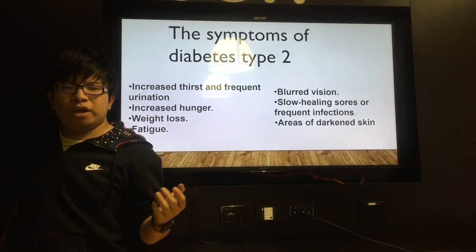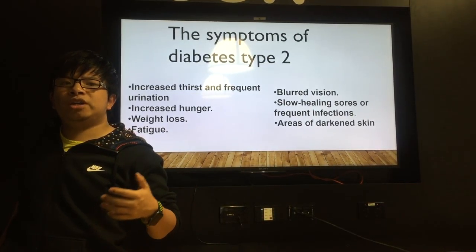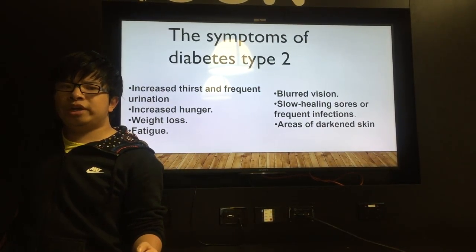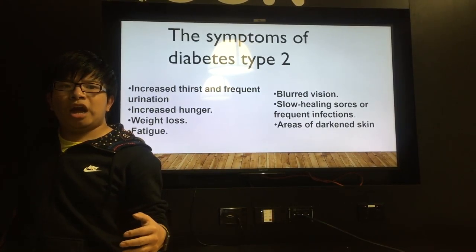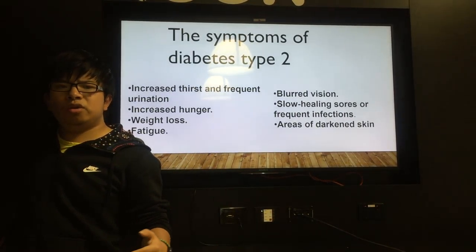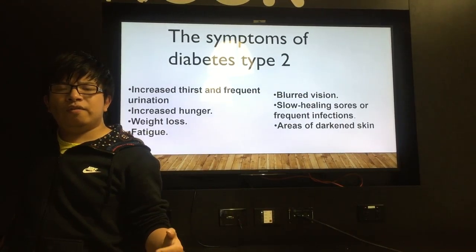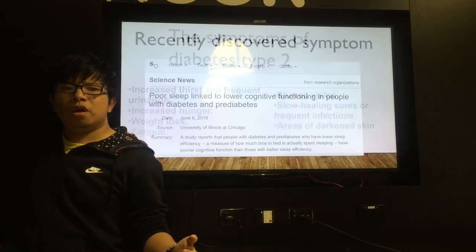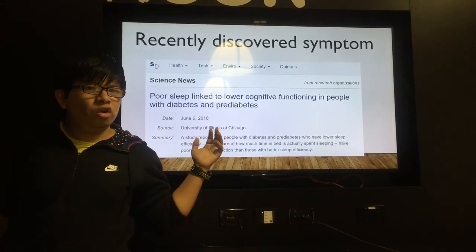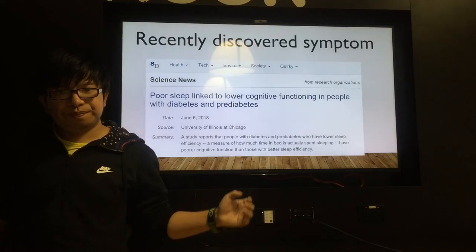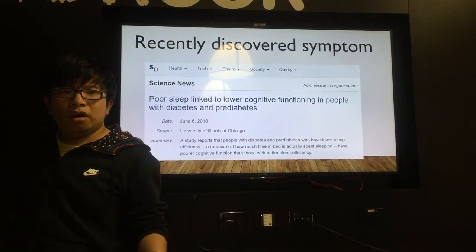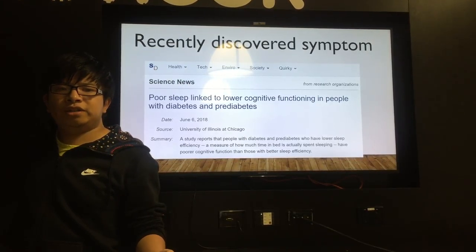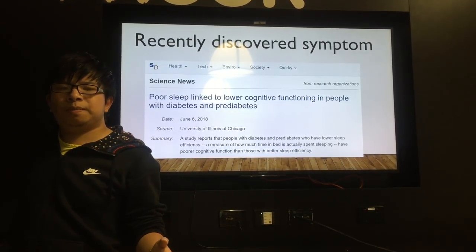The symptoms of type 2 diabetes include slow healing sores, due to type 2 diabetes lowering the body's healing ability and resistance to infection, increased thirst and frequent urination, increased hunger, weight loss, blurred vision, and fatigue. Recently, scientists discovered a new symptom: people with type 2 diabetes also have lower sleep efficiency.